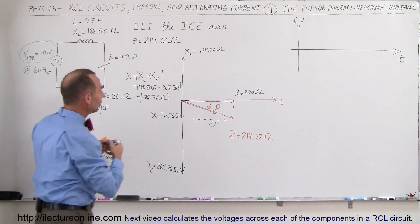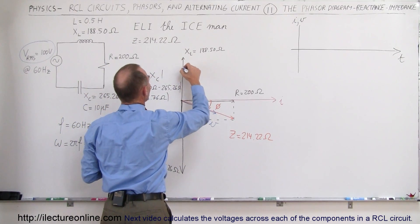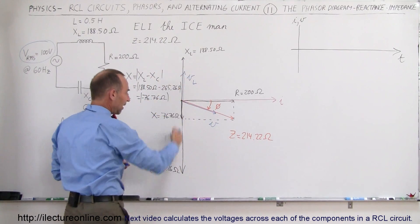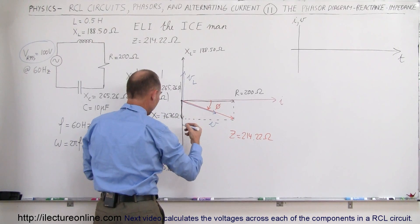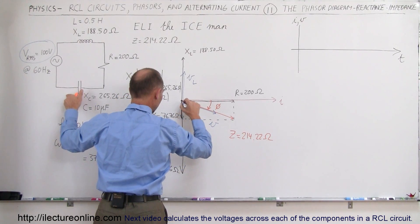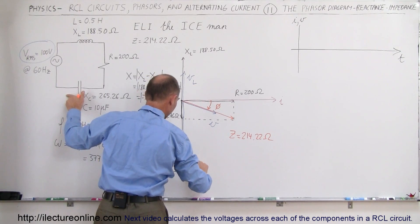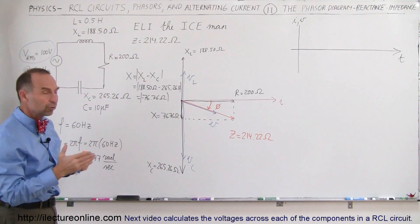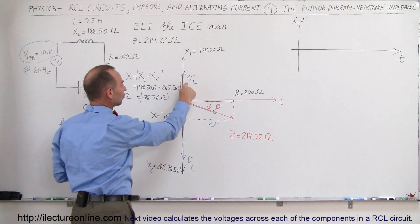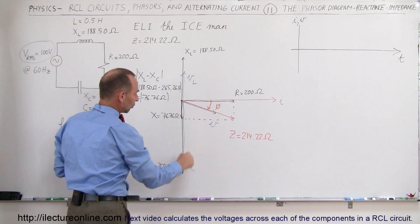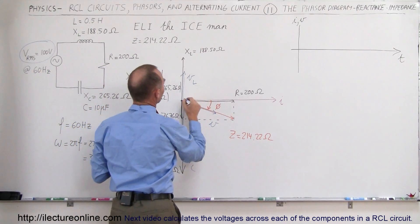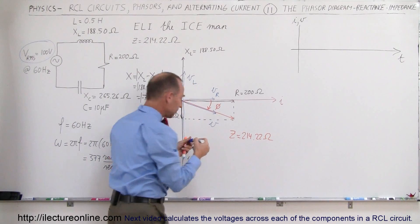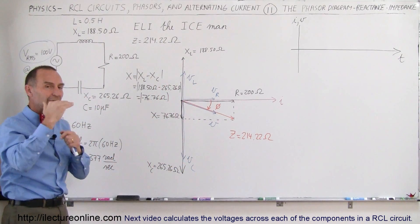The voltage across the inductor will happen at this moment in time, so this would be V sub L. And then the voltage across the capacitor will be in this phase right here. Since it's a large capacitor, I can make that a larger voltage — so this would be the voltage across the capacitor. And now we have what we call a phase diagram that compares when the voltages will reach their maximum. We have the voltage across the inductor, the voltage across the whole circuit, the voltage across the capacitor, and the voltage across the resistor — that would be V sub R.